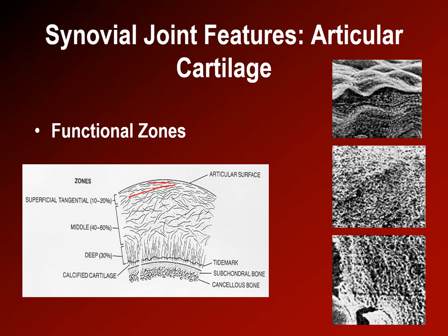The tangential collagen fibers run parallel to the surface of the cartilage — helping resist shear forces across the surface. The collagen fibers in the middle zone are constructed into a web, holding the cartilage and proteoglycan gel ground substance together and resisting forces that might split it. Finally, the deep zone — also called the fibular zone — has collagen fibers crossing from the subchondral bone into the deepest layer of the cartilage.